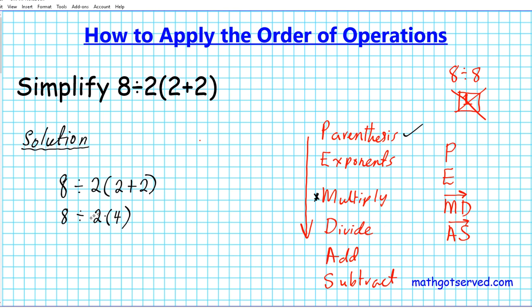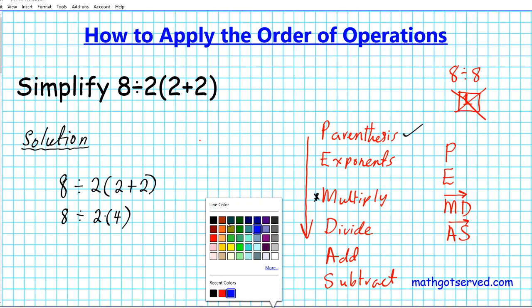So if you look at the division and multiplication, which one shows up first from left to right? The division operation shows up first. So we're going to have to actually divide first before we multiply.